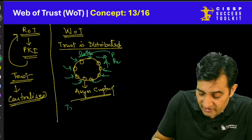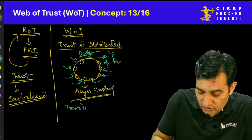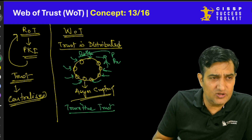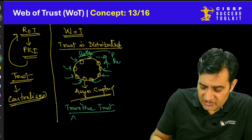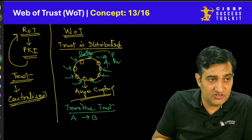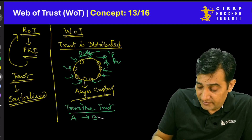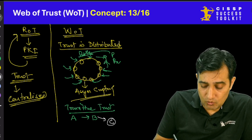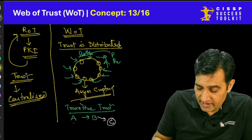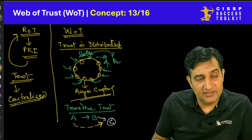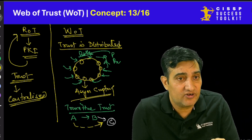Transitive trust also works in web of trust. What is transitive trust? Mr. A trusts Mr. B. Mr. B also trusts Mr. C. So what happens is Mr. A starts trusting Mr. C as well, because C is being trusted by B. This particular model is called transitive trust.